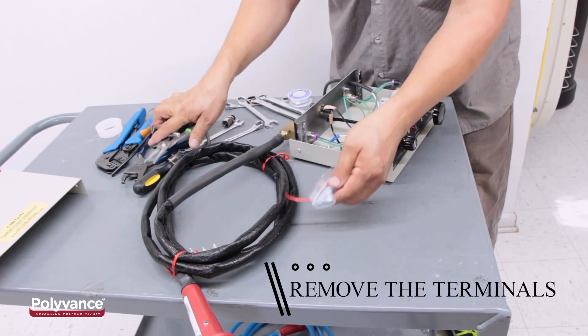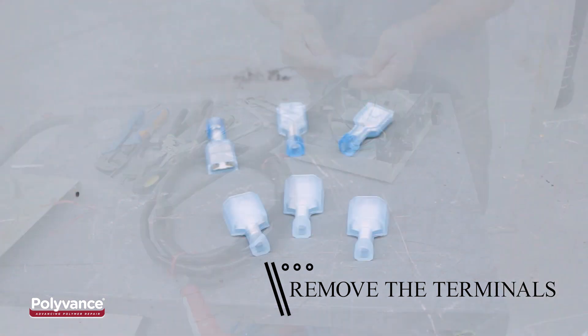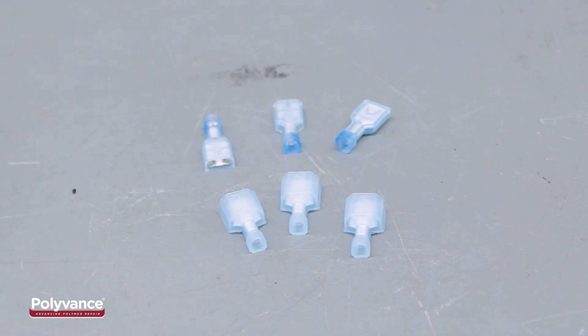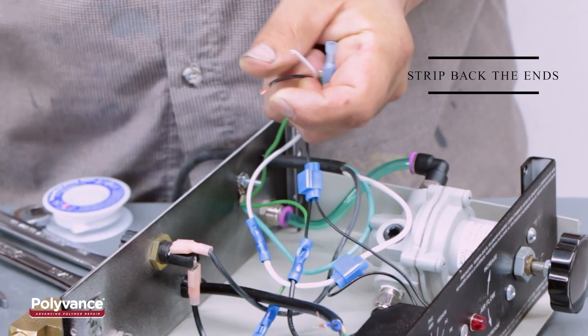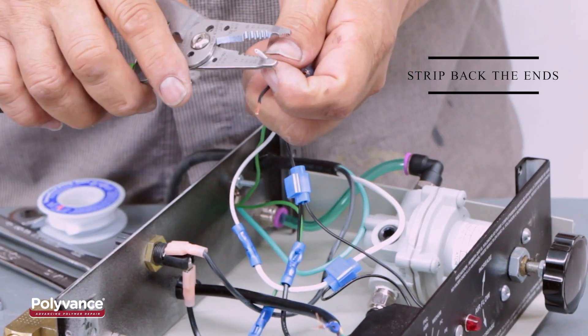Remove the pack of terminals included with the assembly. Strip back the existing white, green, and black wires inside the welder to connect with the new power cord.